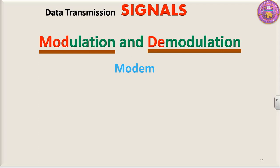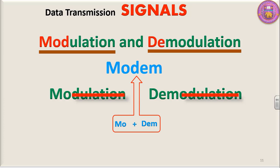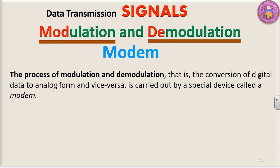Now, this term modem — we took MO from modulation and DEM from demodulation. The word modem is derived from the devices modulator and demodulator, and the processes are termed as modulation and demodulation. It makes a particular device, i.e. modem. The process of modulation and demodulation — the conversion of digital data to analog form and vice versa — is carried out by a special device called a modem.